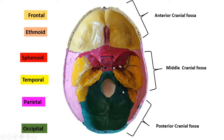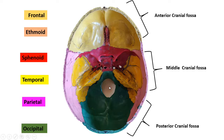The last fossa we have is the posterior cranial fossa. The anterior boundary is the superior border of the petrous temporal bone and posterior to the sphenoid bone. This is the parietal bone, and the big portion you are seeing is the occipital bone. You can identify this fossa by the big foramen magnum.